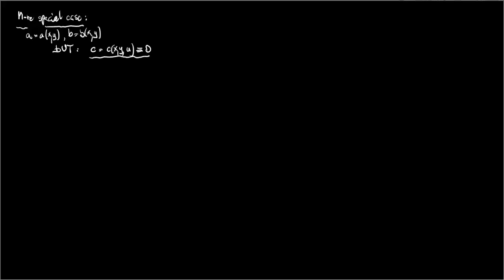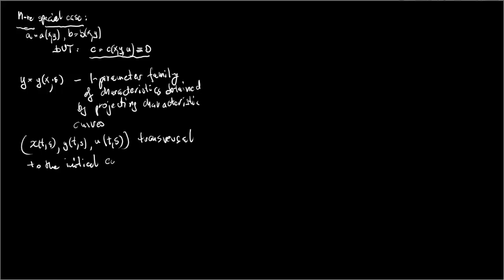So here is our special case. Now consider a one parameter family of characteristics. They are parametrized by a parameter S. And these characteristics are obtained by projecting characteristic curves transversal to the initial curve to the X-Y plane.